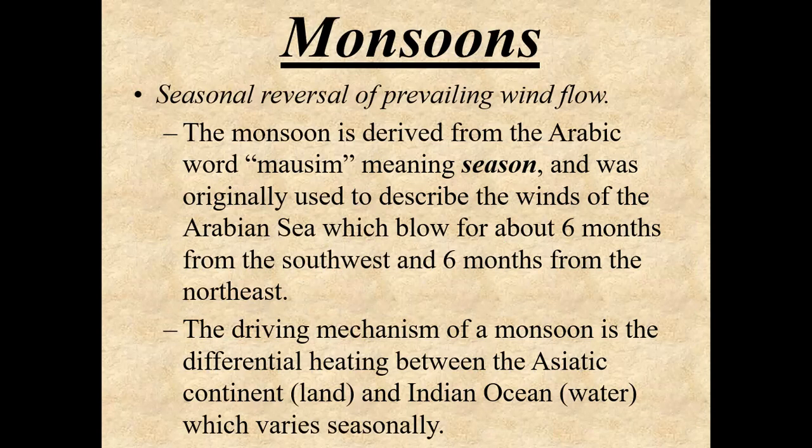Another interesting feature of the tropics is monsoons. Monsoons are a seasonal reversal of prevailing wind flow. The word monsoon is derived from the Arabic word 'mossum' meaning season, and was originally used to describe the winds of the Arabian Sea, which blow for about six months from the southwest and six months from the northeast. Monsoons literally mean seasonal reversal of winds.